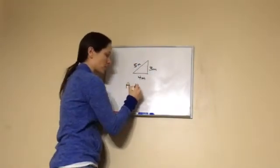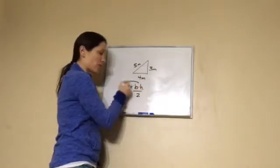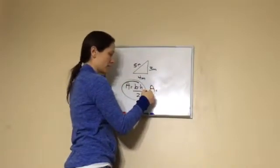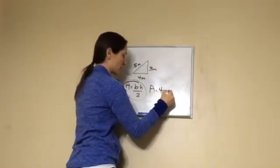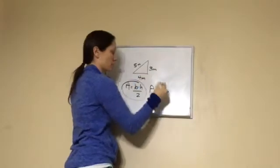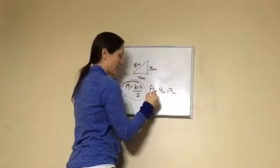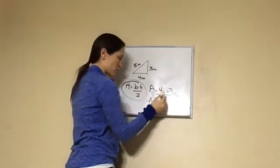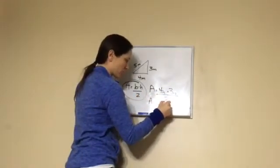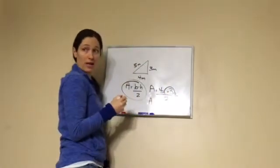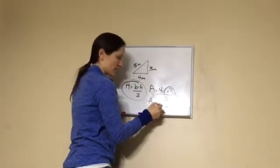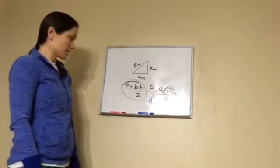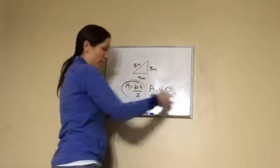So what you would write down is A equals base times height divided by two. I always write down my formula first. Then I move in and I put area equals the base is four meters times the height is three meters, divided by two. Then I answer: area equals four times three is twelve meters squared, divided by two, and then twelve divided by two is six meters squared. That's how you do it and show your teacher you know everything about it.